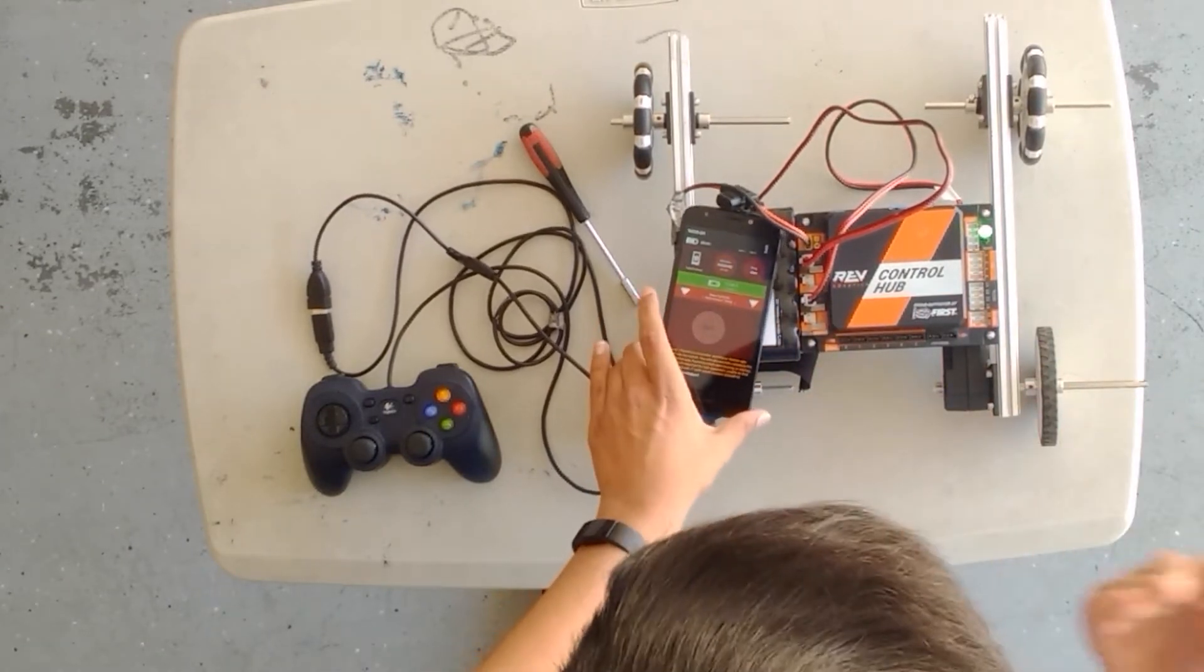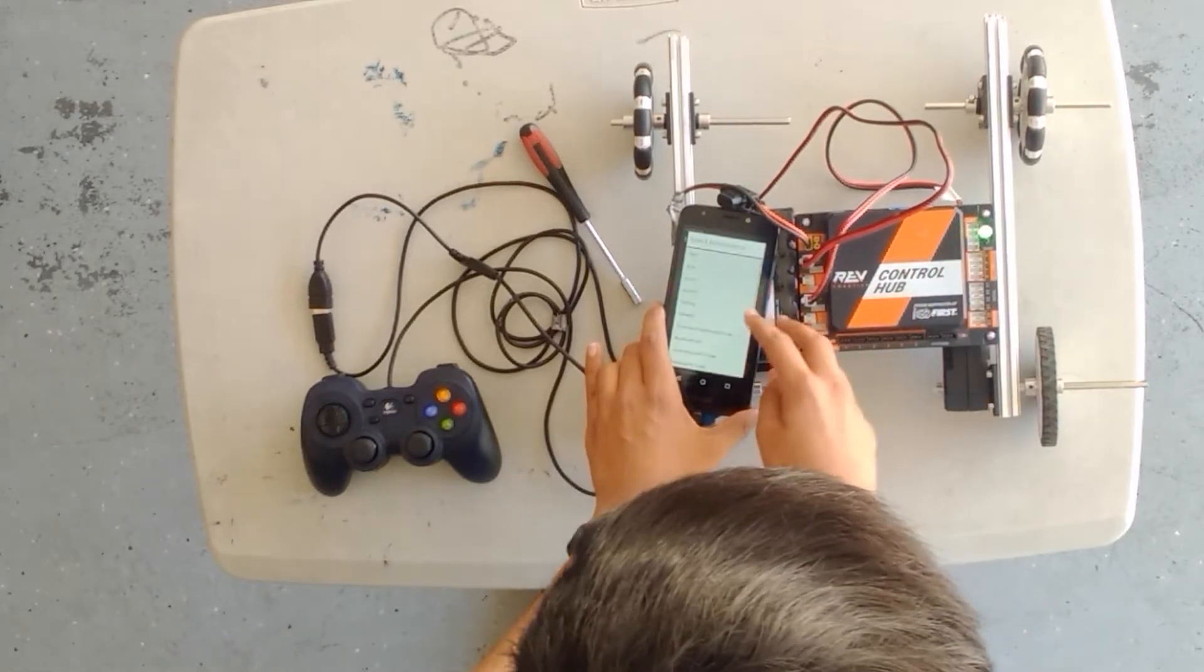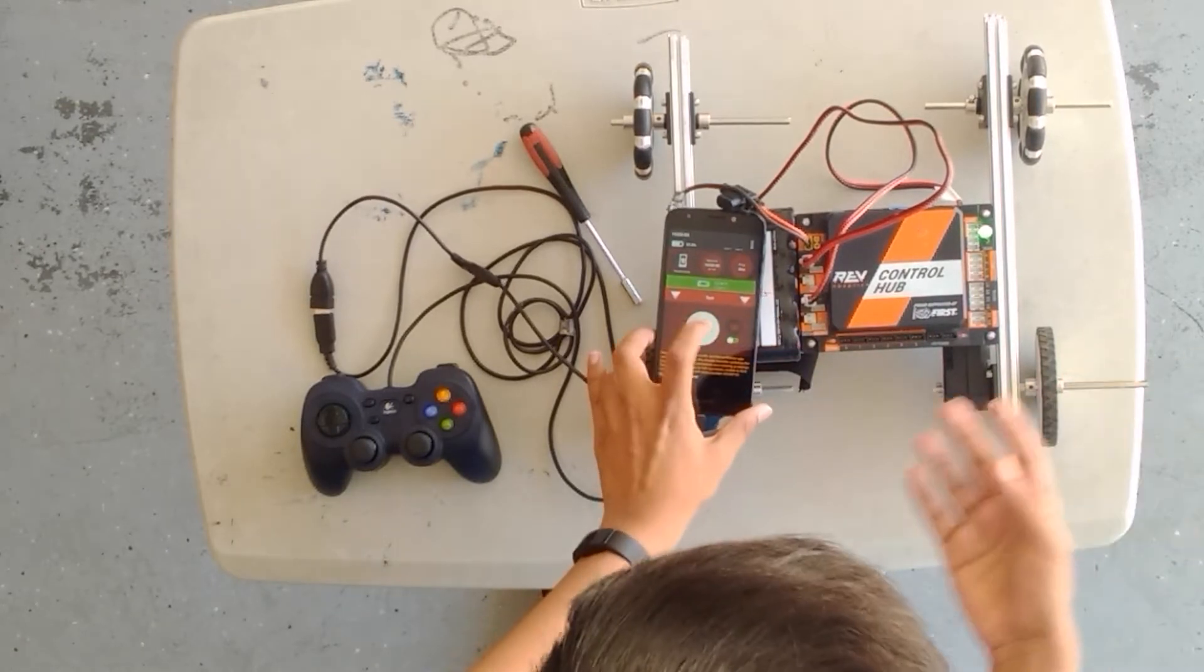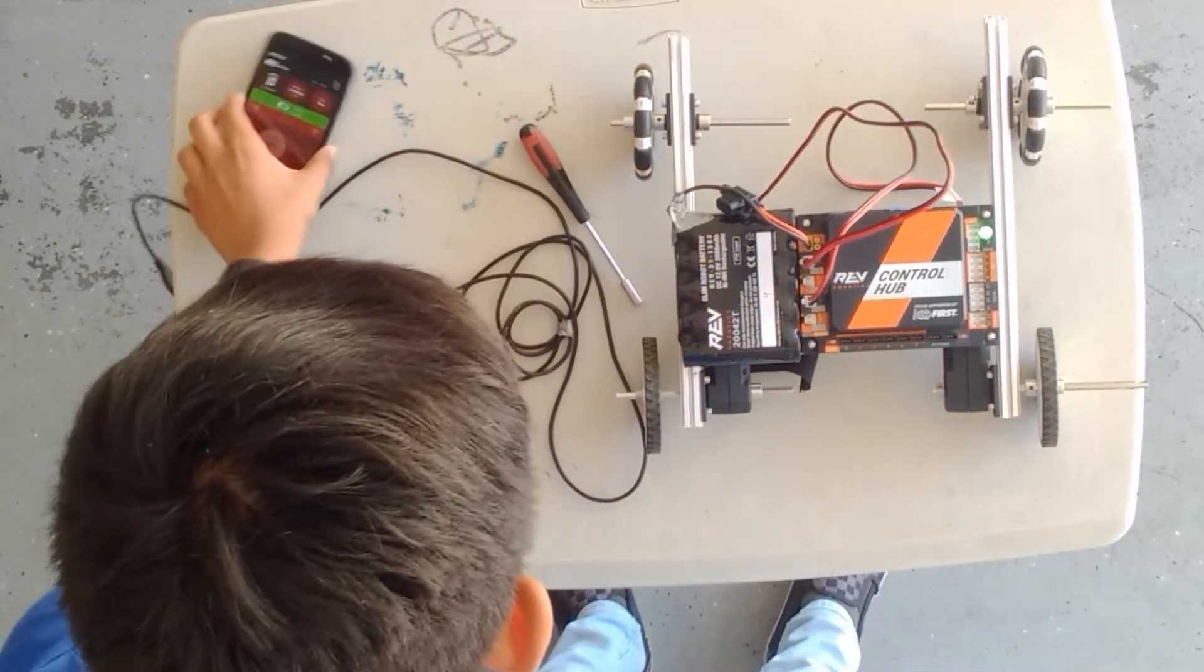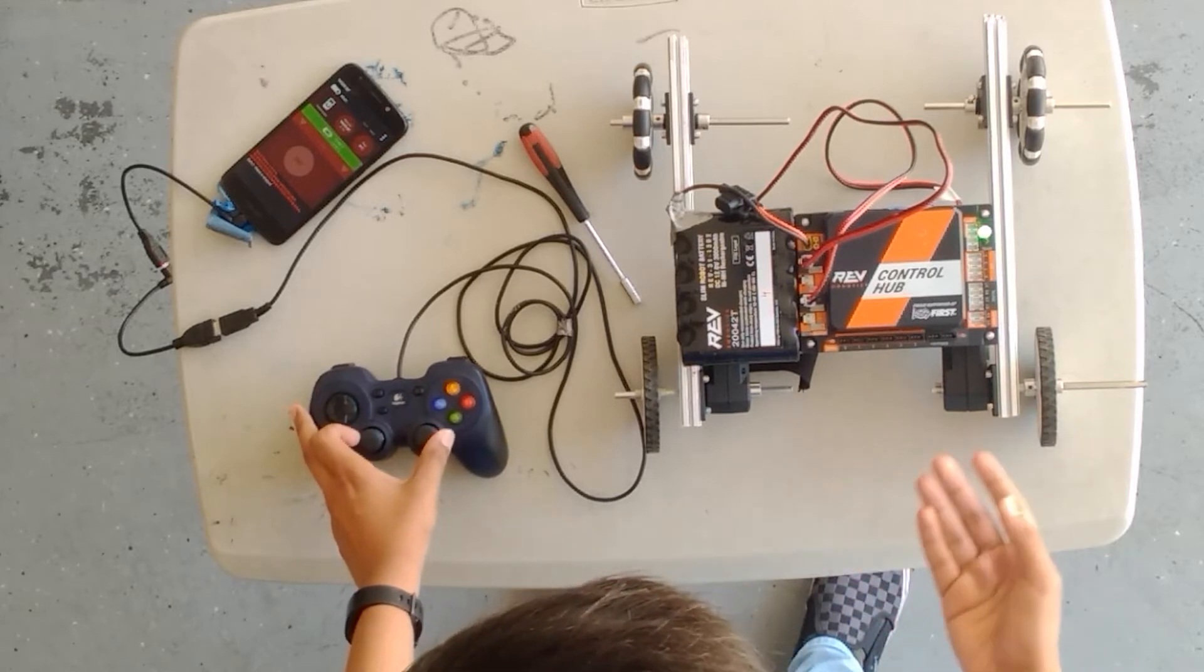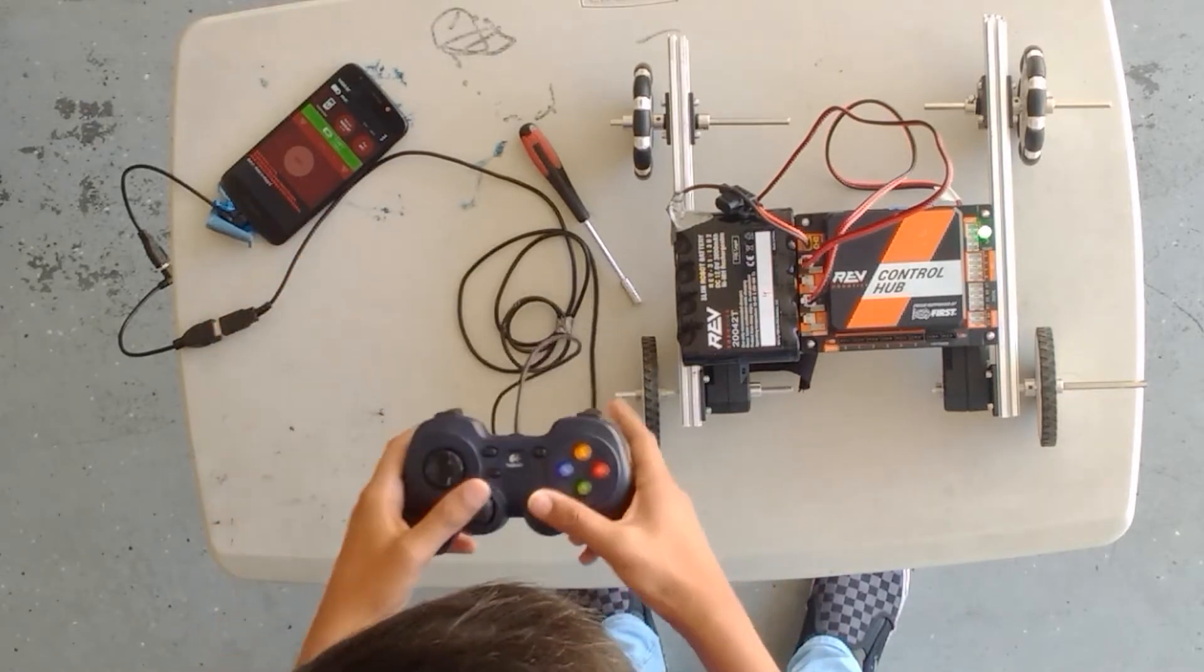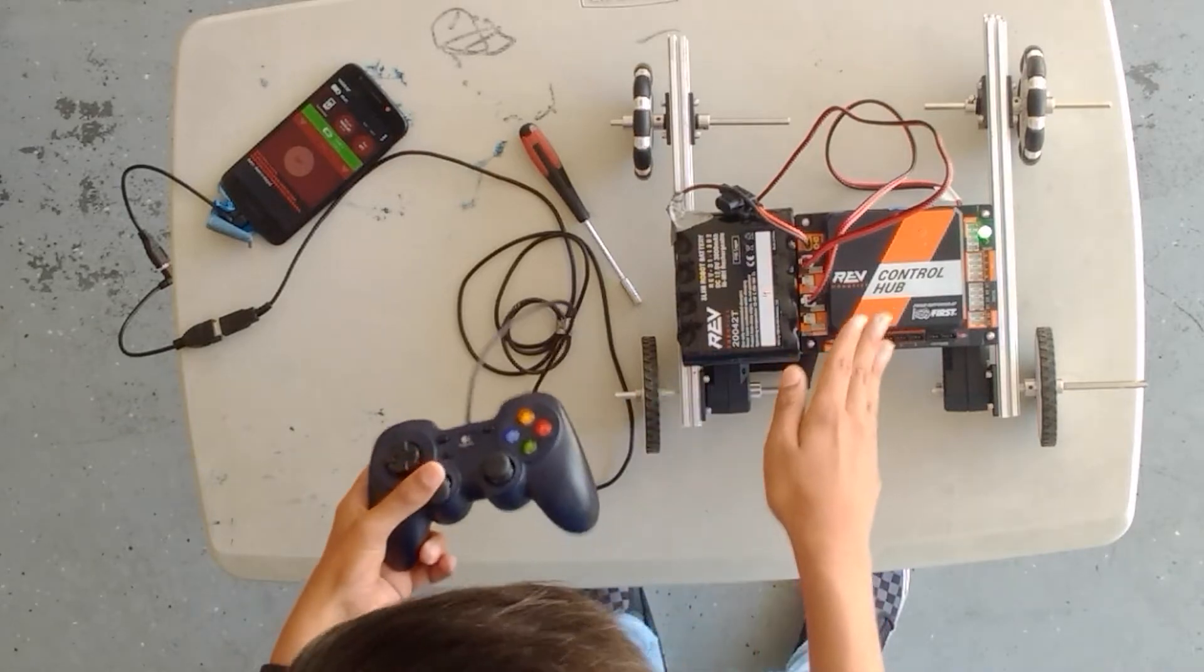For example you will download programs onto this control hub. For example let's play this program which is test. In order to play this we would simply press init and then there's another button here and we press start. That program didn't work because it's just a test run but that's basically how you control a robot using a control hub. If you ran a tele-op program which involves a controller you would do the same stuff except after you started the program you would then use the controller to control the robot.